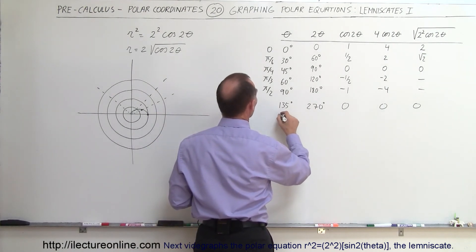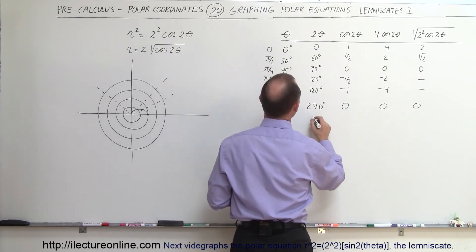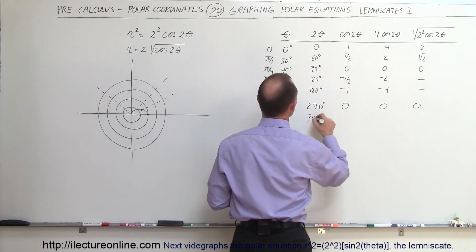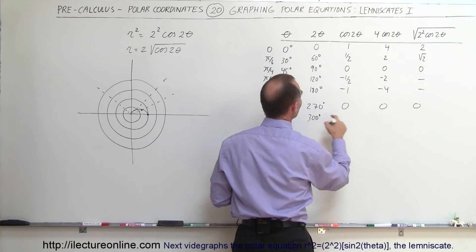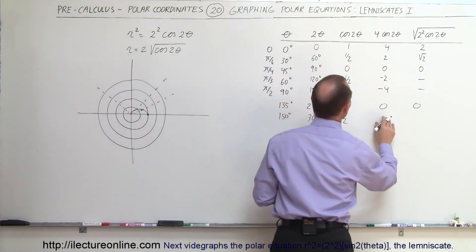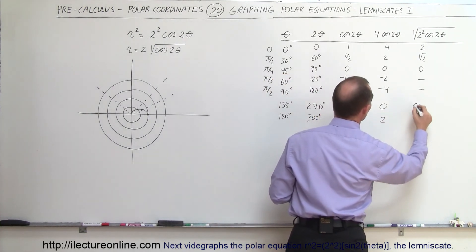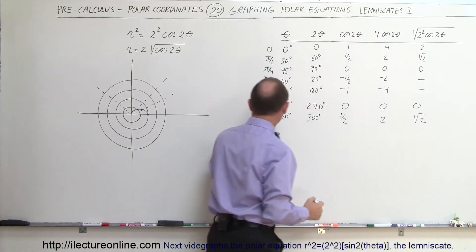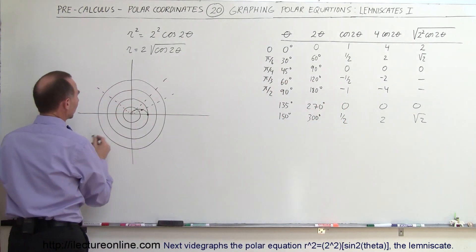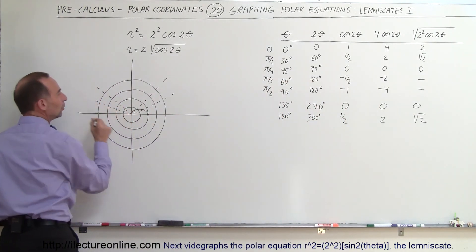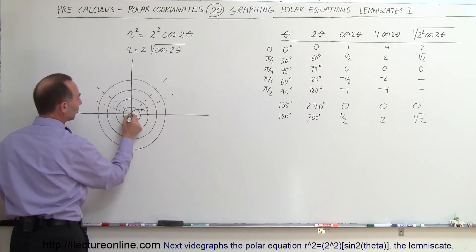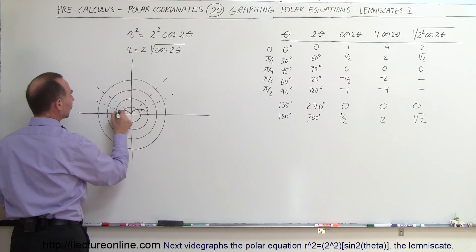Then if we continue with that, let's see what happens. At 135, let's go 150 degrees, that would be equal to 300 degrees, and the cosine of 300 degrees, that gives us 1 half, that would be 4 times that, which would be 2, and the square root of that would be the square root of 2. So at an angle of 150 degrees, which is right over here, notice we again get values from 0 to the square root of 2, then back to 2, and so forth, so then we get this function right here.